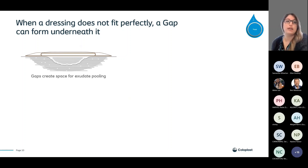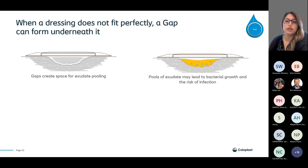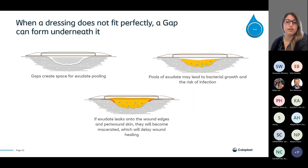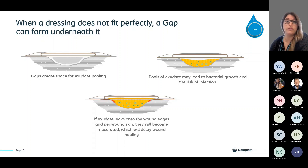When a dressing doesn't fit properly, a gap can form underneath it. This gap creates space for exudate to pool and sit there, and this is where bacteria likes to grow in that wet environment. Pools of exudate lead to bacterial growth, which then leads to a risk of infection, so we need to try to prevent this from happening. If exudate leaks onto the wound edges and peri-wound skin, they become macerated, which can delay wound healing, risk infection, and cause the wound to become bigger in size.